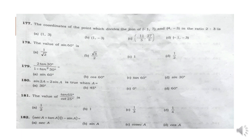Question 177: The coordinates of the point which divides the join of (minus 1, 7) and (4, minus 3) in the ratio 2 is to 3 is Option A: (1, 3).